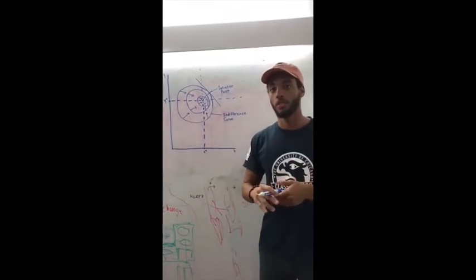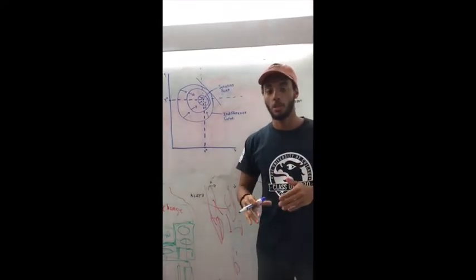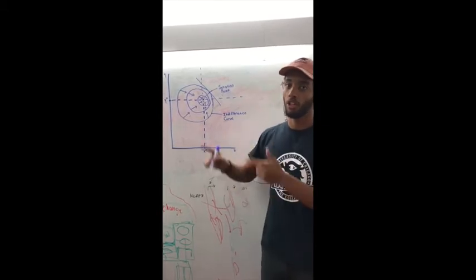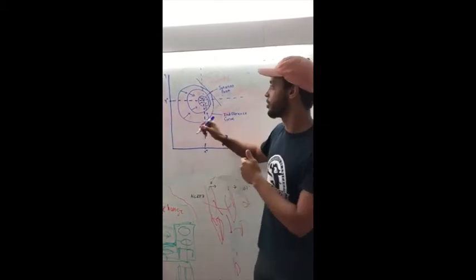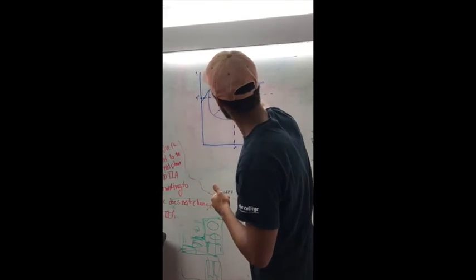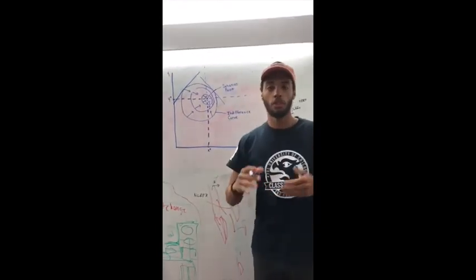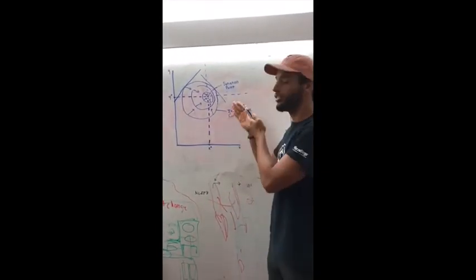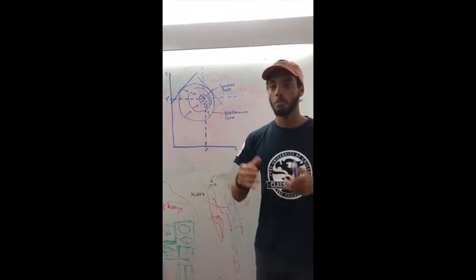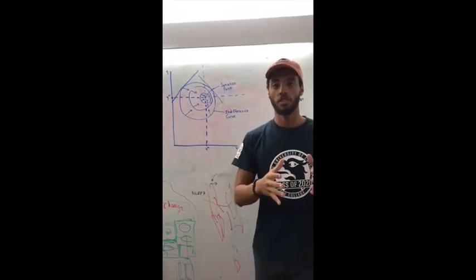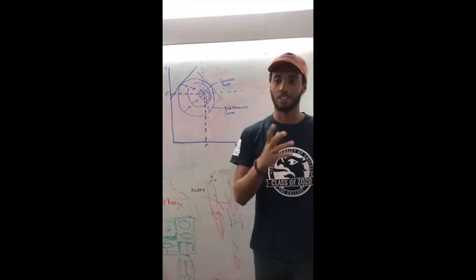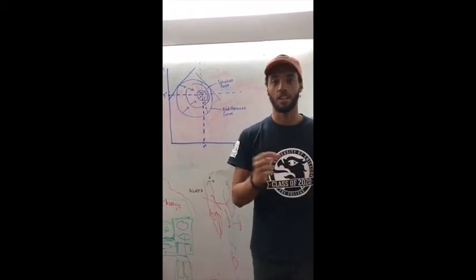If the slope of the indifference curve is positive, we know the consumer has too much of one of the goods. In order for the consumer to move towards the satiation point, or the ideal bliss point, he must reduce the consumption of goods he has too much of, and augment the consumption of goods he has too little of.